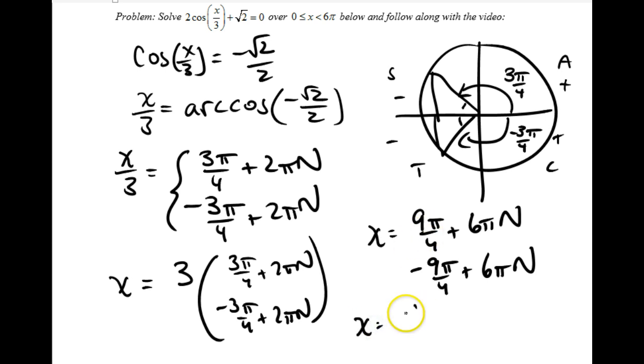x is going to be 9 pi over 4. That one works. If I add 6 pi to my 9 pi over 4, I'm definitely going to be outside of this 6 pi. So that's my only answer there.